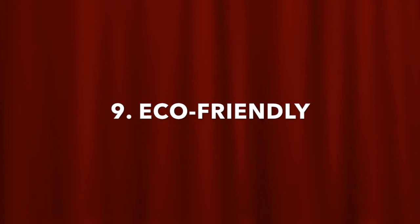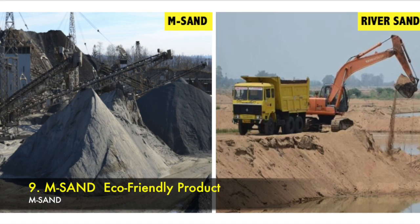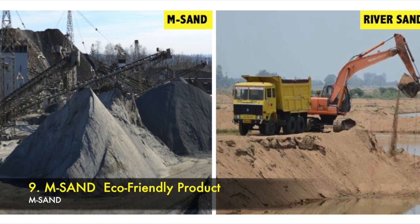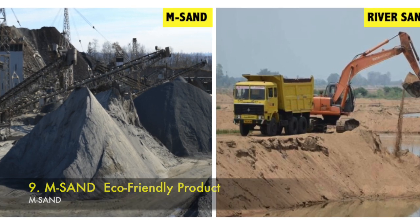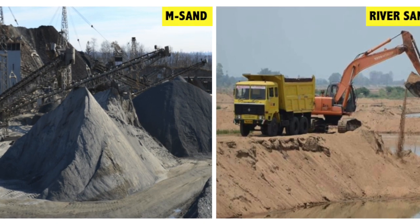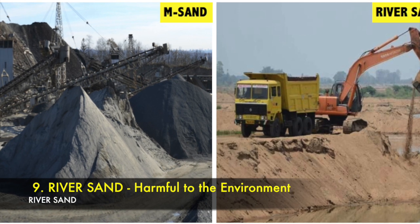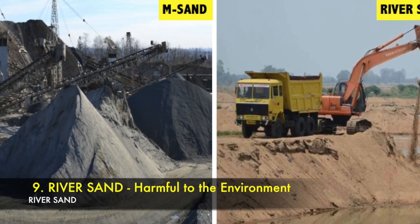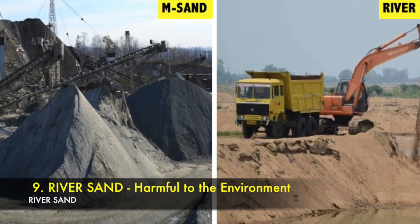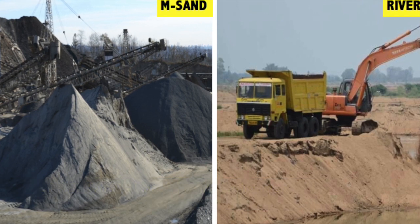Point 9 — M sand: Eco-friendly product; it causes less damage to the environment when compared with river sand. River sand: Harmful to the environment — ecological imbalance reduces groundwater levels and river water gets dried up.